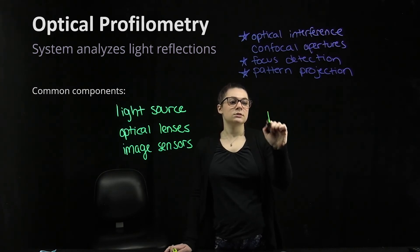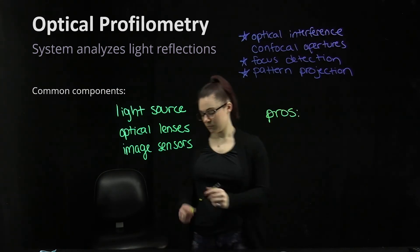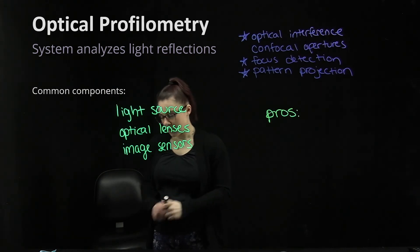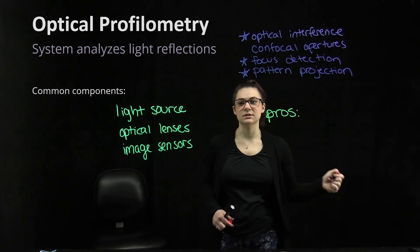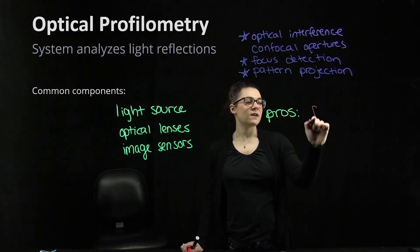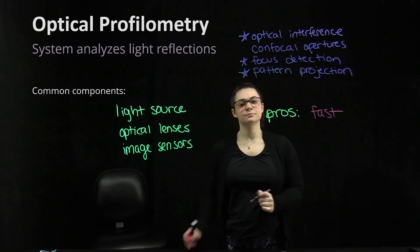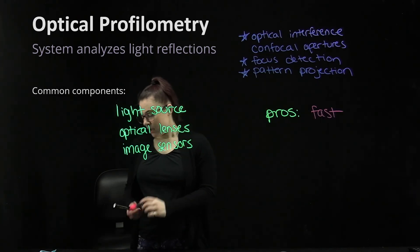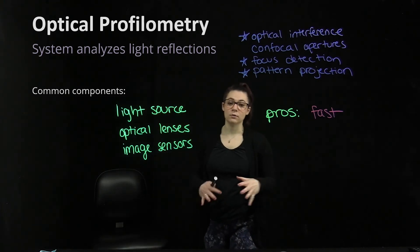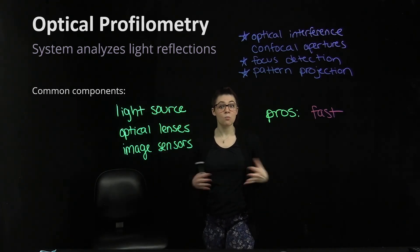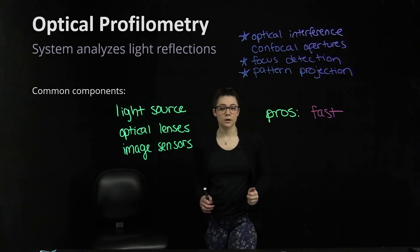Let's look at the pros and cons of optical profilometry. A key pro is that we get really fast measurements, because we're not measuring point by point — we're measuring multiple points at a time, usually an entire area at once.